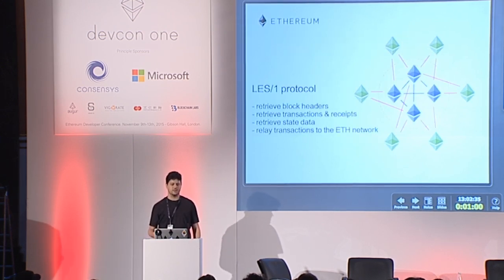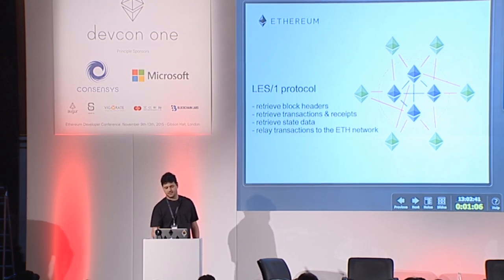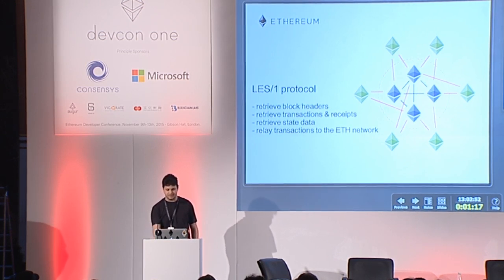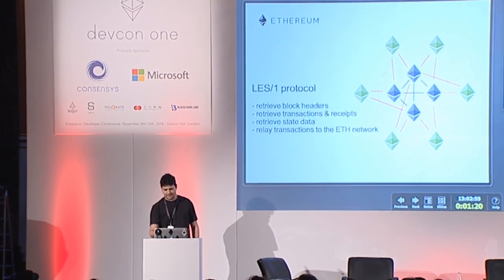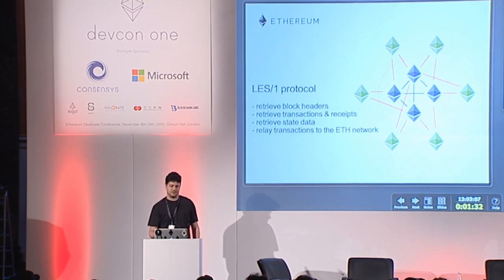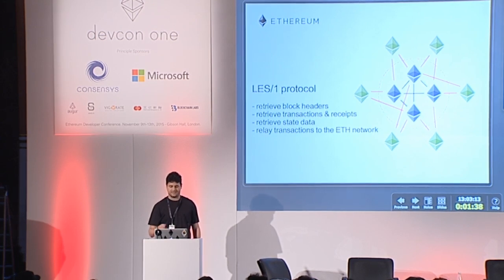For all these purposes we have developed the LES protocol. There's a topology shown in the slide which shows that the blue diamonds represent traditional full nodes and the green diamonds are LightNodes connecting to them. The green LightNodes are downloading only block headers as each new block appears in the blockchain, which is a lot less network traffic than downloading entire blocks, and they only download block and state data as it is required by the applications.